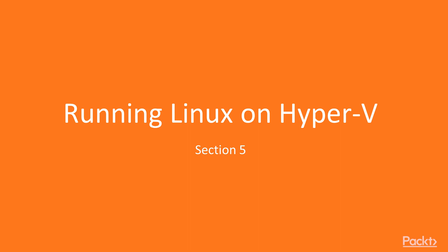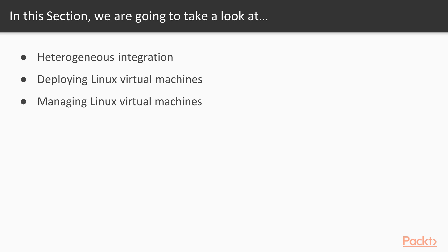In this fifth section, we cover Linux and FreeBSD support on Hyper-V. This section has three videos. Heterogeneous integration is the first one, where we discuss how Microsoft provides Linux and BSD support on Hyper-V. We then have two sections focused on Linux deployment and management.